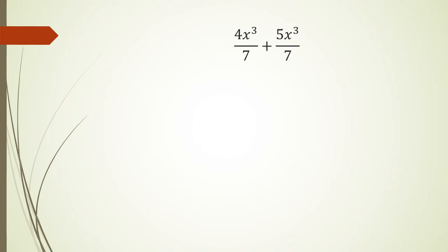This time I have 4x cubed over 7 plus 5x cubed over 7. In this case it doesn't matter, we still write it up as the same thing: 4x cubed plus 5x cubed and the whole thing over 7. And because x cubed are common like terms, I'm going to get 9x cubed over 7.